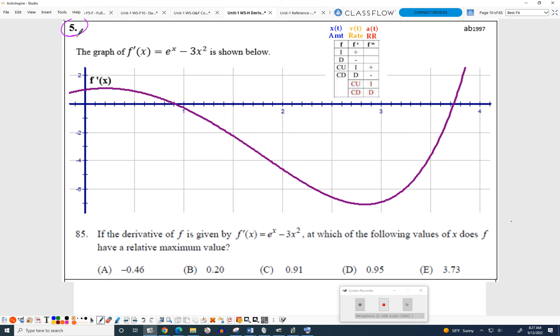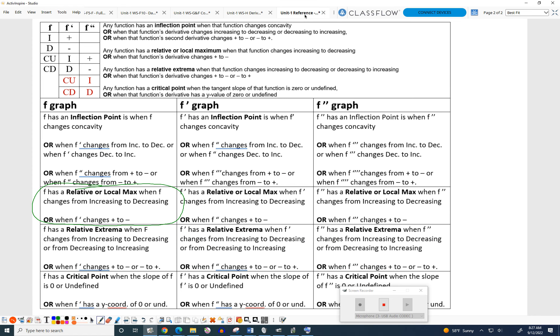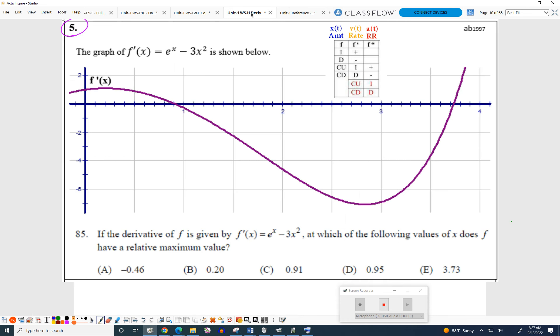Okay, the box that you're reading says right here: F has a relative or local max when F changes increase to decrease. The problem we're working on wants us to find a relative max on F. But the trouble is, we are not given a picture of F. We're given a picture of F prime.